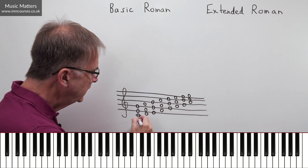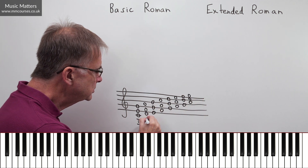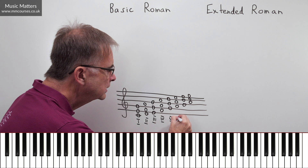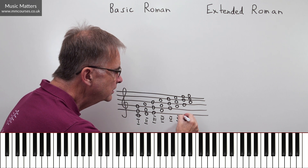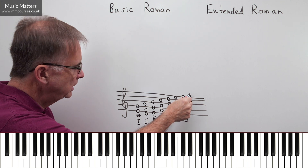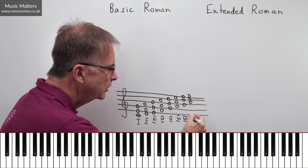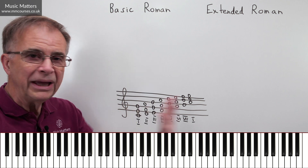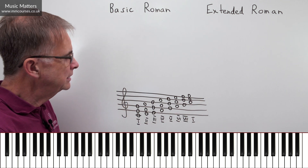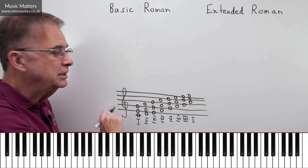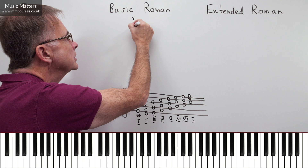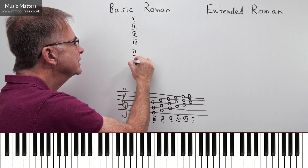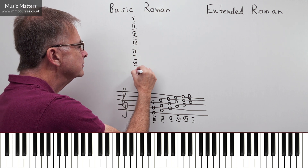We simply number off each degree of the scale: number one, two, three, four, five, six, seven. And this one is not number eight, because C-E-G is a repetition of C-E-G, so it's number one again. That's the basic system. So if I'm going to use the basic Roman descriptions, I simply write I, II, III, IV, V, VI, VII. Simple as that.